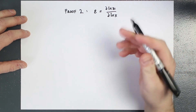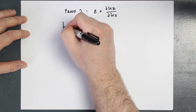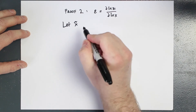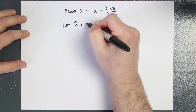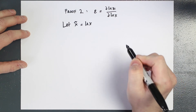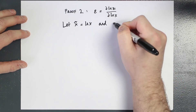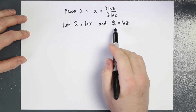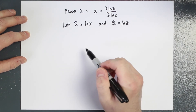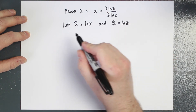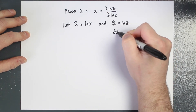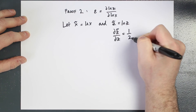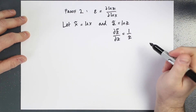Now I'm going to do a change of variable. Let x-tilde denote log x, and let z-tilde denote log z. We know that the partial derivative of z-tilde with respect to z is simply 1 over z — that follows from the rules for differentiating logarithms.